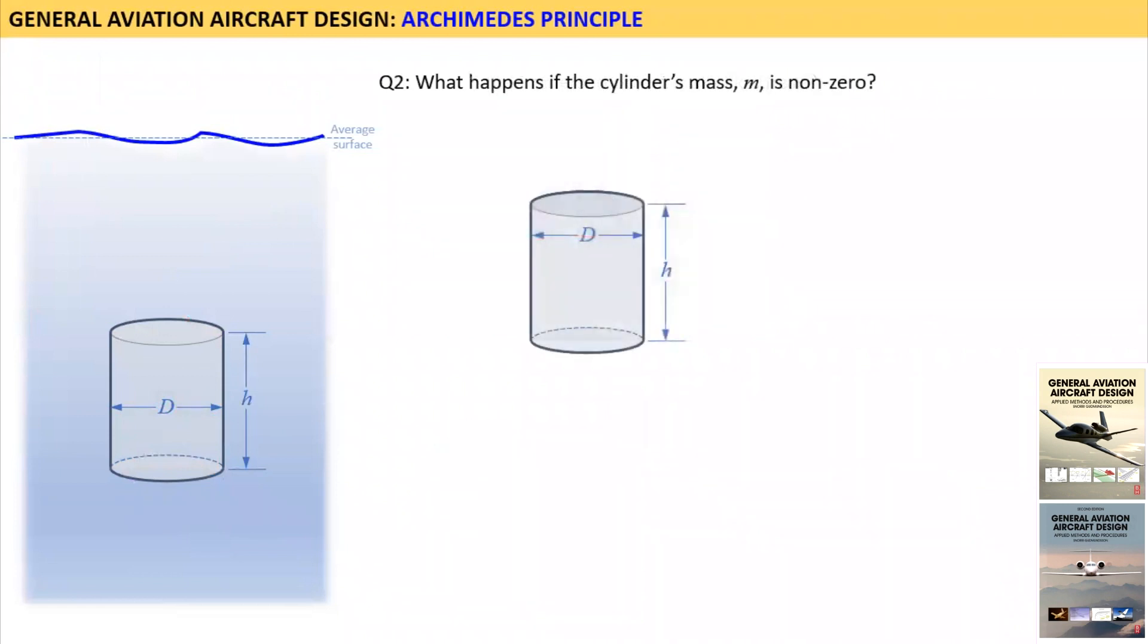The second question is, what happens if the cylinder's mass, M, is not zero?